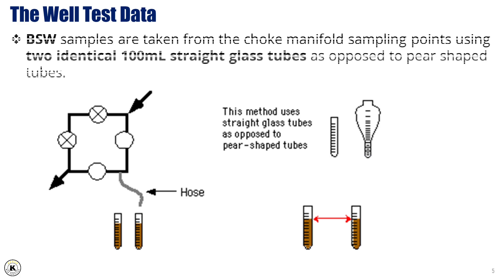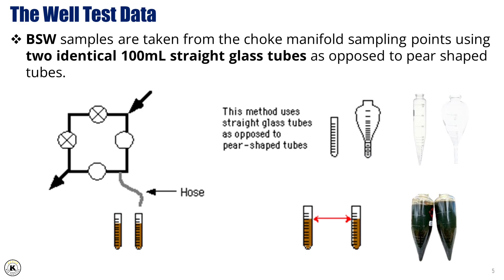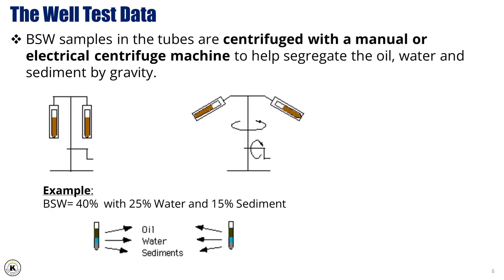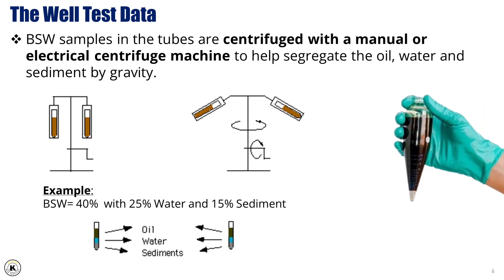2. BSW (basic sediment and water) — measured using a hand or electric centrifuge machine. This data helps in determining the amount of water and sediment in the produced fluids, which is crucial for evaluating well cleanup progress and production quality. BSW samples are taken from the choke manifold sampling points using two identical 100 mL straight glass tubes, then centrifuged to segregate the oil, water, and sediment by gravity.